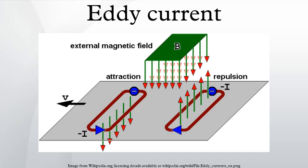Eddy currents are circular electric currents induced within conductors by a changing magnetic field in the conductor, due to Faraday's law of induction. Eddy currents flow in closed loops within conductors, in planes perpendicular to the magnetic field.